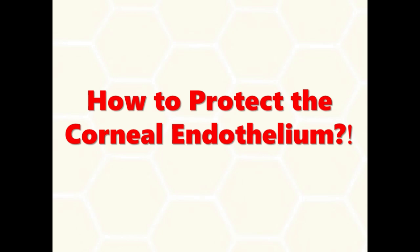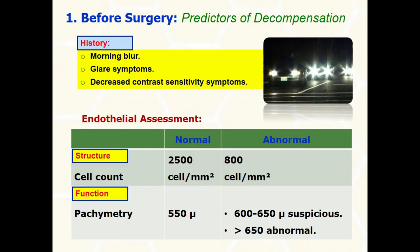How to protect the endothelium? Pay attention to the predictors of endothelial dysfunction. Blurring of vision a short period after awakening or difficulty driving at night are suggestive of subtle corneal edema. Endothelial assessment is helpful in high-risk eyes. The endothelium maintains the clarity of the cornea by two mechanisms: passive barrier, represented by the endothelial cell count and morphology, and the active barrier of the sodium-potassium pump, represented by corneal pachymetry.